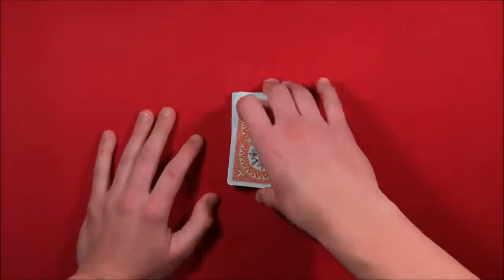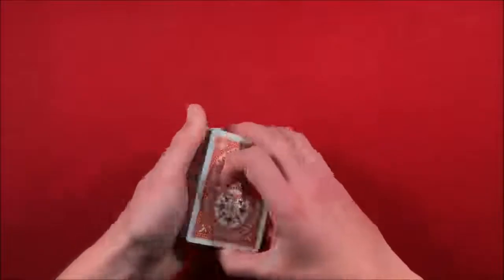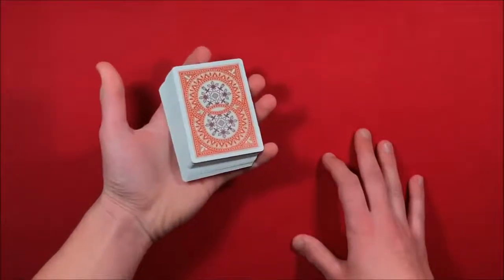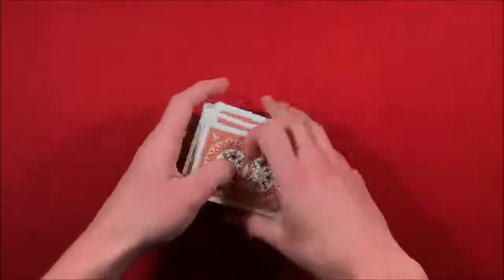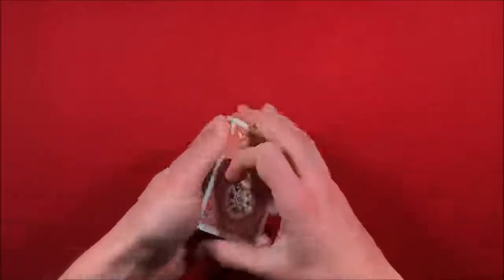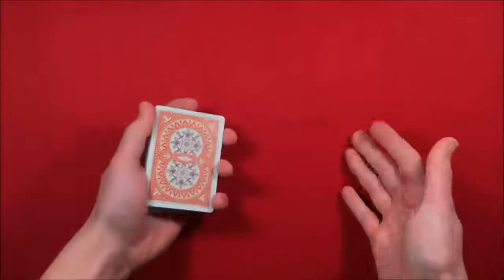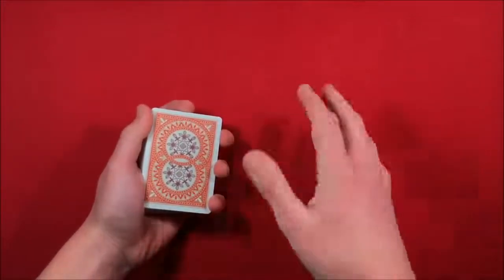To begin, the first thing you want to do is you could have the spectator shuffle up a borrowed deck or anything, they could shuffle it up. And at this point all you have to do is get a double lift. So I'm going to leave a link on the screen for the double lift here.